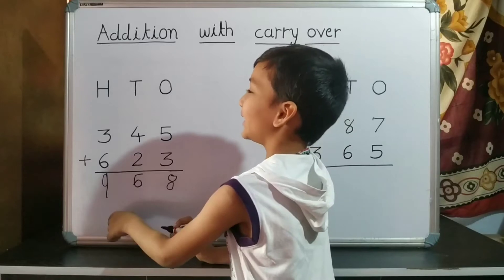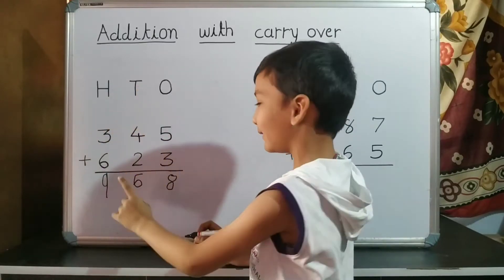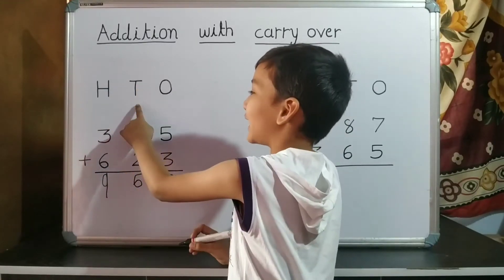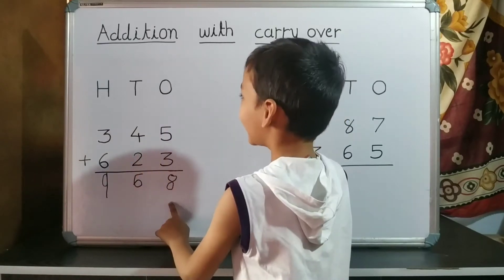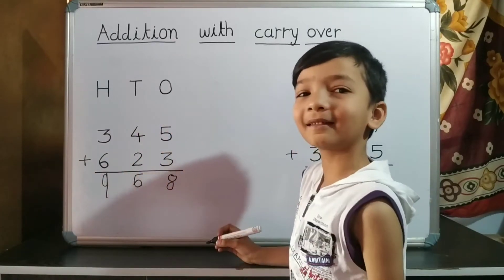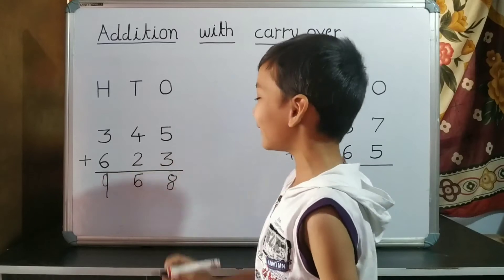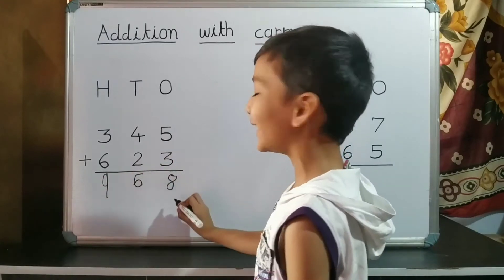9 is on hundred's place, 6 is on ten's place, and 8 is on one's place. So our answer is 968.